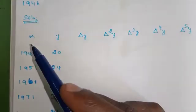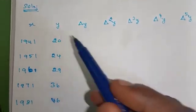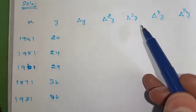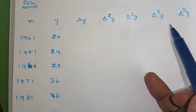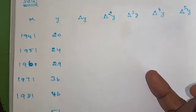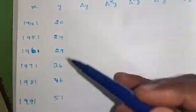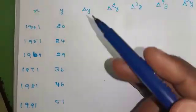Solution. Put the terms: x, y, Δy, Δ²y, Δ³y, Δ⁴y, and Δ⁵y. So x values and corresponding y values. First we will find Δy.